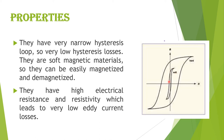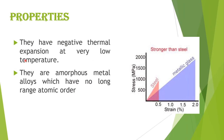The hysteresis curve of a metallic glass is narrow. They are soft magnetic materials, so they can be easily magnetized and demagnetized. They have high electrical resistance and resistivity, leading to very low eddy current losses. They have negative thermal expansion at very low temperatures and are amorphous metal alloys with no long-range atomic order.